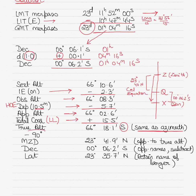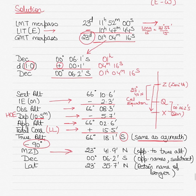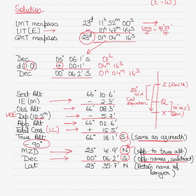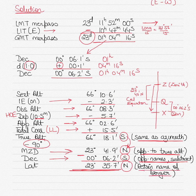Subtract the true altitude from 90 degrees — subtract the smaller from the bigger — and you get your meridional zenith distance of 23 degrees 41.9 minutes. Name it north because it is named opposite to the true altitude; the true altitude was south, so the MZD is north. Then apply the declination. Since the MZD and declination are different names — north and south — you subtract the smaller from the larger to get the observed latitude, naming it after the larger value. The MZD was larger and north, so the latitude is north.